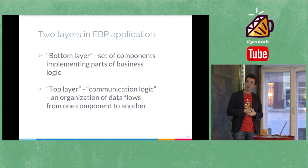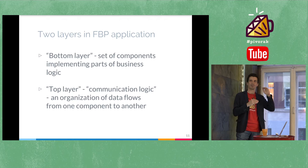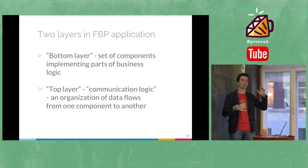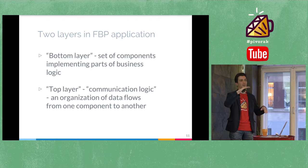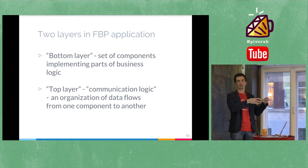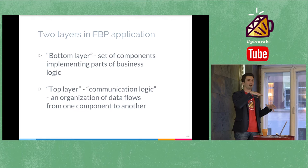A very important thing about the FBP approach is that every flow-based programming application consists of two layers. The bottom layer is the business logic itself — a set of components, where each component implements a part of the business logic. The other layer is the top layer, so-called communication logic. It's the logic that allows these independent components to communicate with each other, because components are independent and don't know about the existence of other components. We need some layer to orchestrate communication between them.